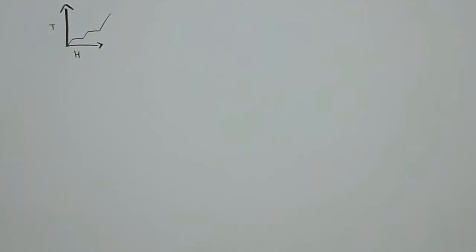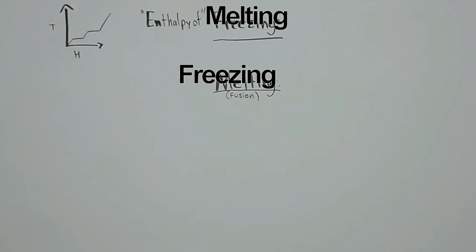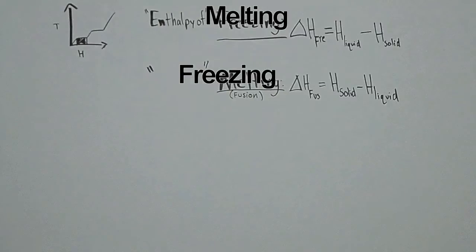This is why. Let's analyze the enthalpy of melting, also known as fusion, and enthalpy of freezing. Fusion happens when H liquid is the final state minus H solid, the initial state. Freezing occurs as the reverse, by having H solid as the final state and H liquid as the initial state. You guys probably picked up on the pattern already. Depending on which physical state is final and initial, we will get different phase changes.